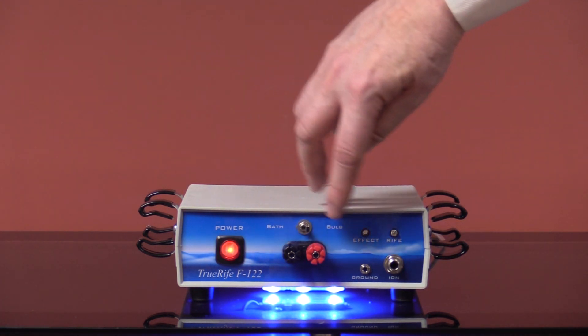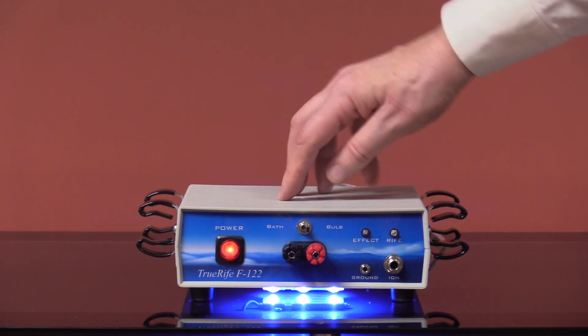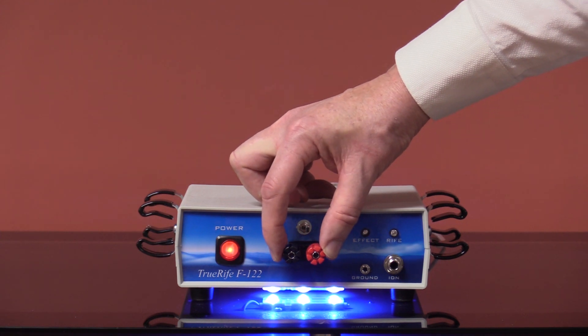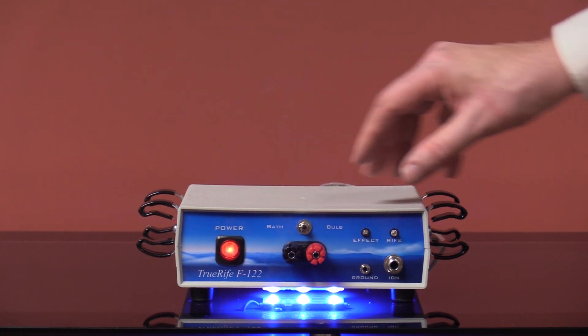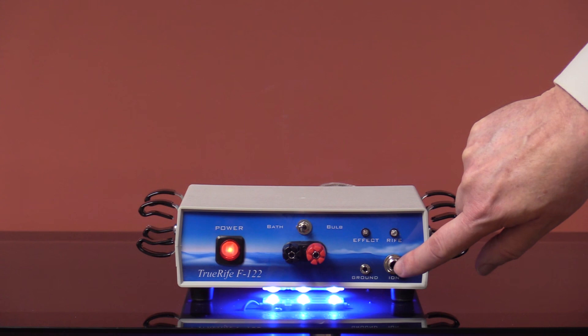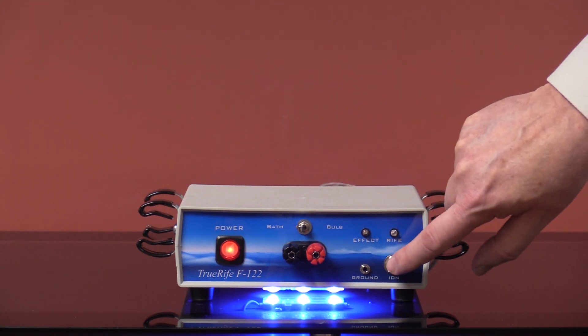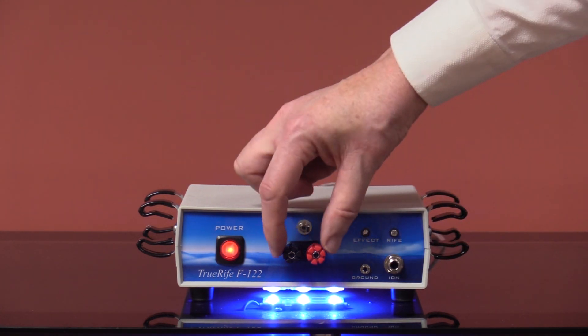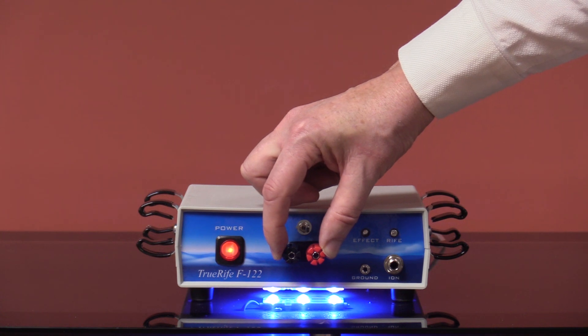You have two settings: bulb or bath outputs. Right now it's set for bulb. These are your bulb outputs here. If you put it to bath, this is your bath output here. This is about 12 volts on bath. We're looking at 1800 volts here on bulb.